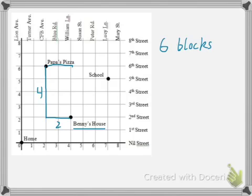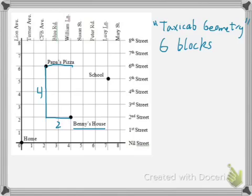Now, because you were restricted to walking on the streets, it's not like you can just walk through buildings or anything. I call this taxicab geometry, because it's how a taxicab would have to get there. But what if you were a bird? How would you travel? Well, if you were a bird, you could fly over buildings, so those wouldn't matter. You could fly directly there. I would call this 'as a crow flies.'